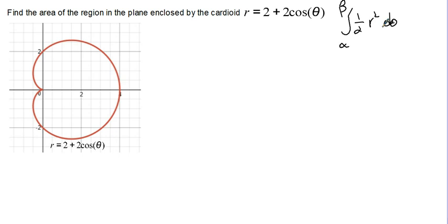So for our cardioid, the starting point of the period will be 0 and the ending point will be 2 pi, so we'll integrate from 0 to 2 pi, 1 half of our r value, 2 plus 2 cosine theta, squared d theta.